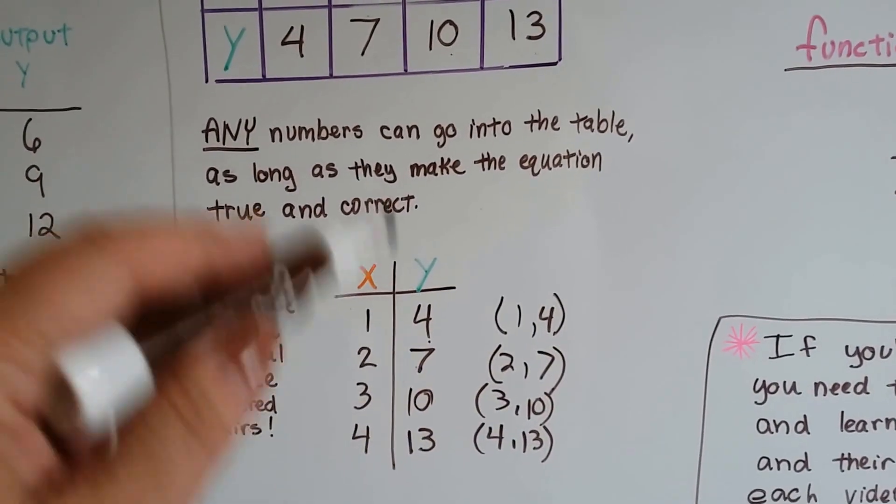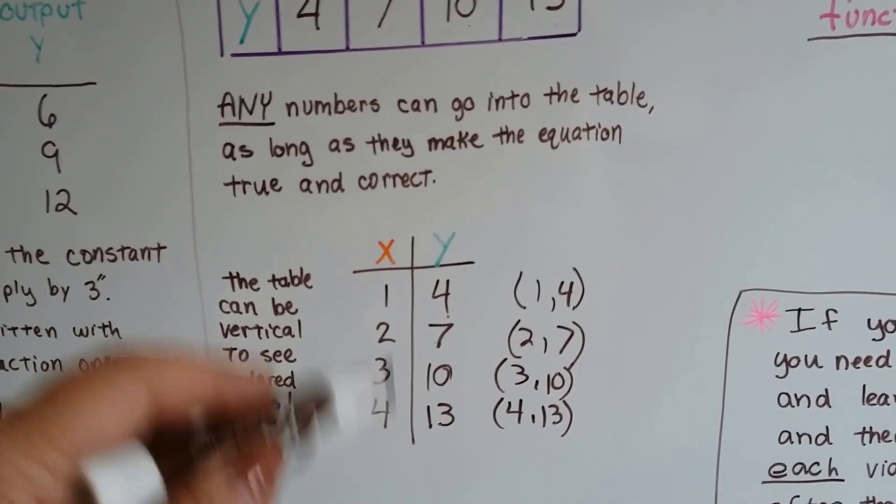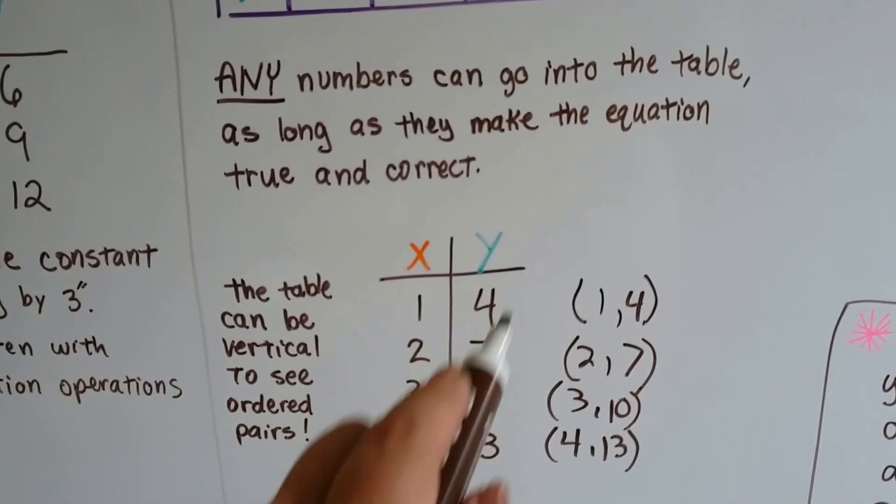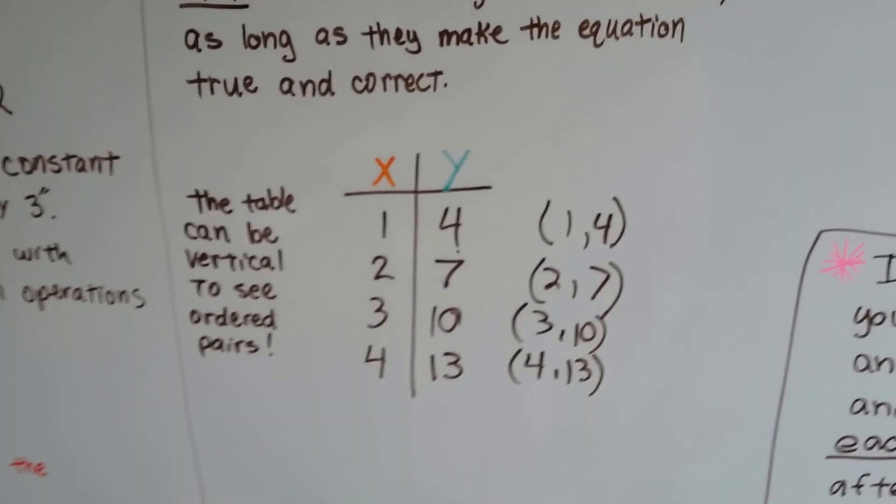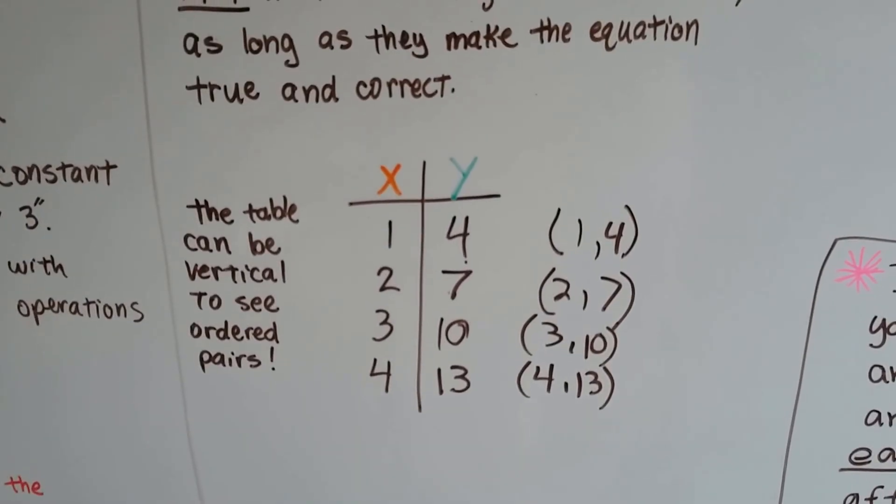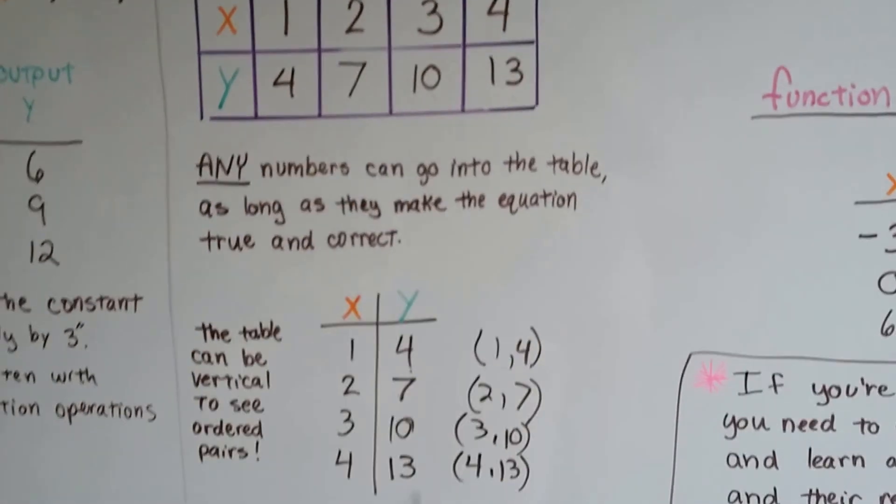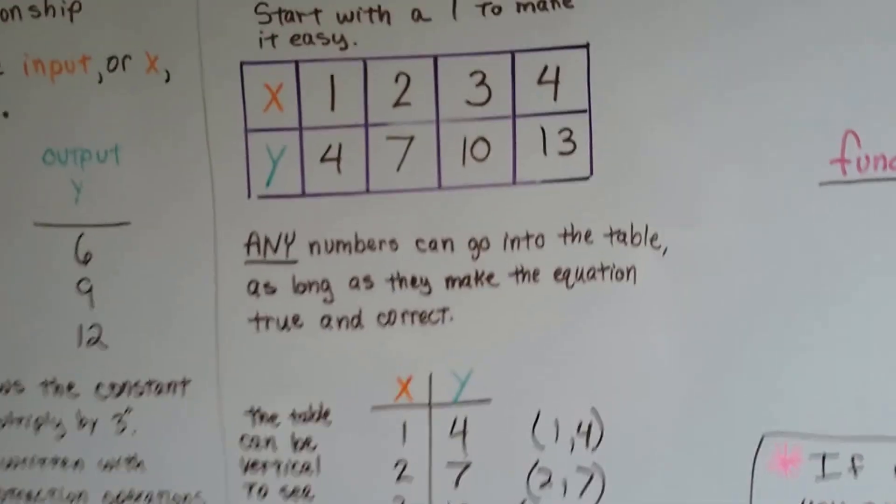We can even write the table vertically this way because then we can see ordered pairs. These are our x values and our y values. All we have to do is put parentheses around them and we see our ordered pairs that we could plot on a coordinate plane. I know you're used to seeing it this way, but this way is a lot easier.